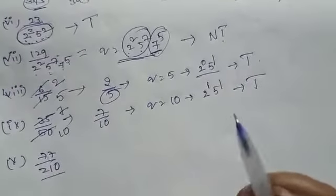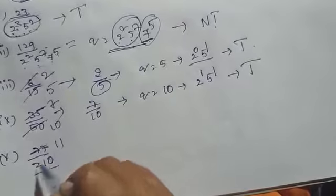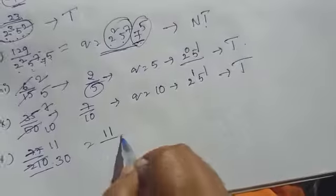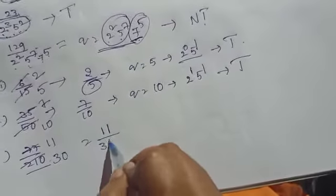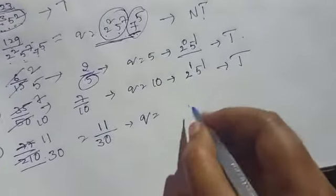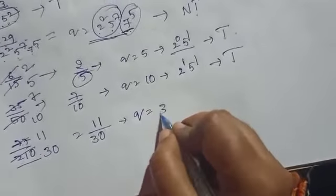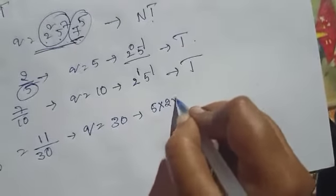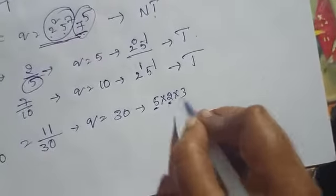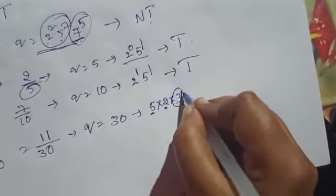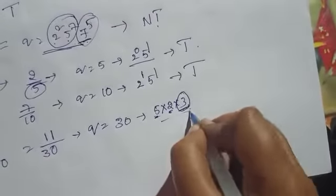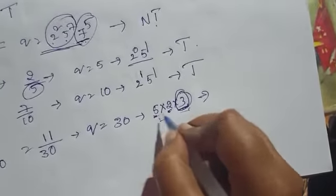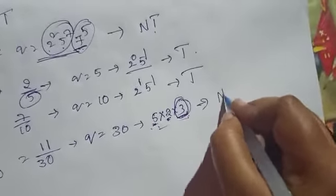Next: 77 by 210. Simplifying: 7 is common — 7 into 11 over 7 into 30 — this fraction becomes 11 by 30. Here q equals 30. 30 can be written as 5 into 6, and 6 equals 2 into 3. So we have 2 and 5, but we also have 3. Since there is an extra factor of 3 other than 2 and 5, we can't write it in the form of only 2 and 5. So it is non-terminating.